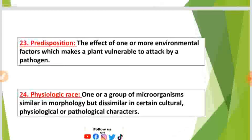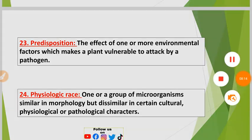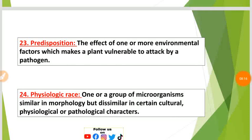Number twenty-three: Predisposition — the effect of one or more environmental factors which makes a plant vulnerable to attack by a pathogen.